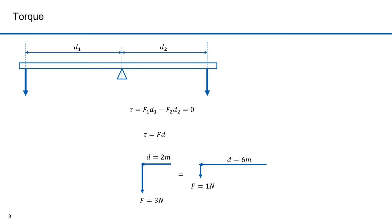In the seesaw case, equilibrium requires the counterclockwise torque exerted by the person on the left to be balanced by the clockwise torque exerted by the person on the right. Tau equals F1 times d1 plus F2 times d2. The forces F1 and F2 counteract each other. If d1 equals d2, then the forces have to be equal in magnitude to cancel out. If d1 is less than d2, then F1 has to be greater than F2 for the forces to cancel out.